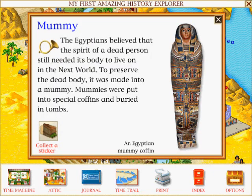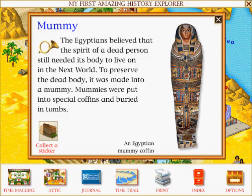Mummy: The Egyptians believed that the spirit of a dead person still needed its body to live on in the next world. To preserve the dead body, it was made into a mummy. Mummies were put into special coffins and buried in tombs.